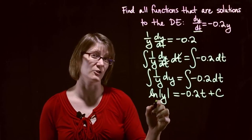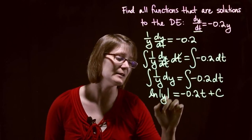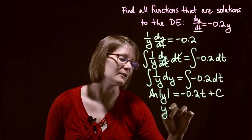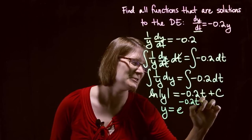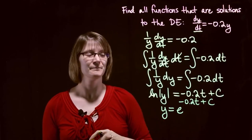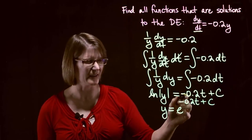So now here, how do I undo a natural log function? Well, remember that's a base of e, so I'm going to do e to both sides. So that's going to give me y equals e to the negative 0.2t plus c. And we could actually leave it like this, but typically you don't want to do that.